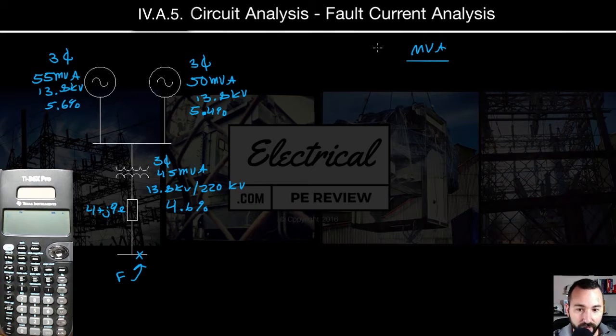So let's start. We're going to use the MVA method. We're going to start by converting all of our values into their fault contributions. Starting with, we'll call this G1 and G2 from left to right.